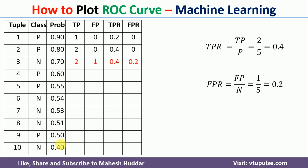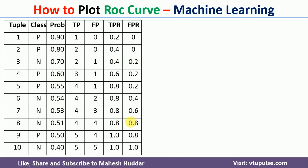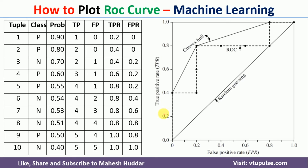Similarly, we have to calculate all other TPR and FPR values. Once you calculate TPR and FPR for all these data points, we can easily draw the ROC curve. The ROC curve is drawn as TPR against FPR. We have already calculated TPR as well as FPR for all the thresholds.